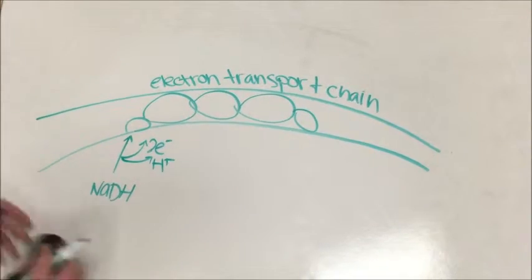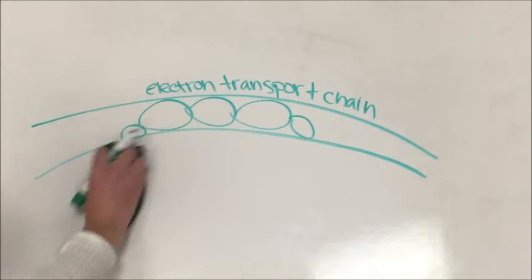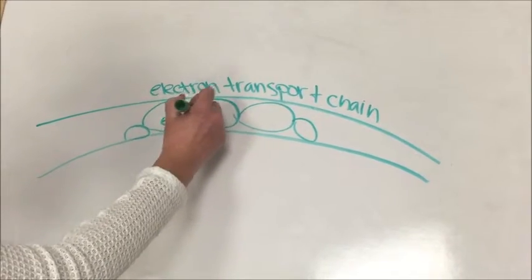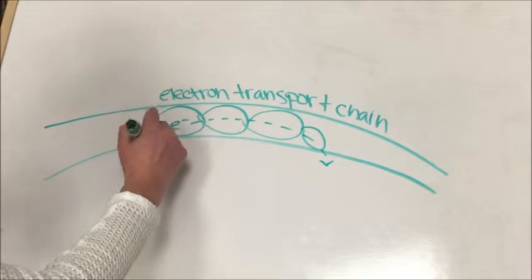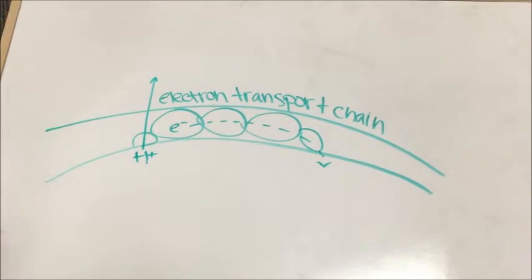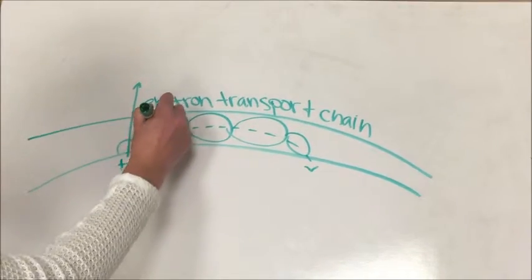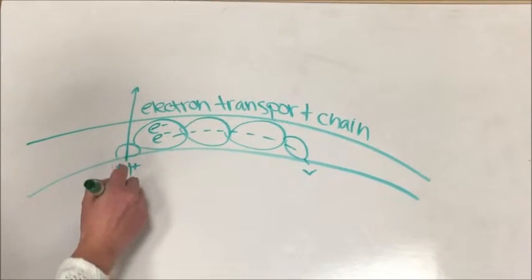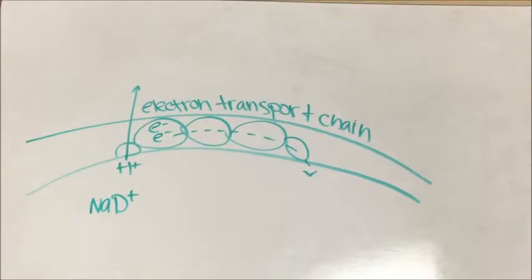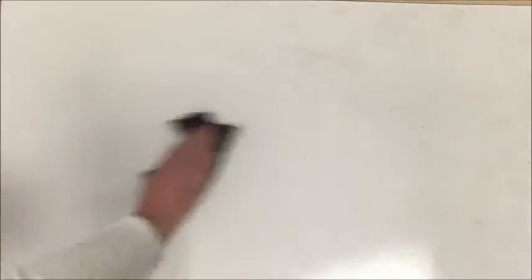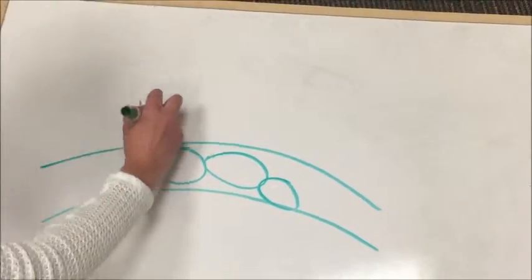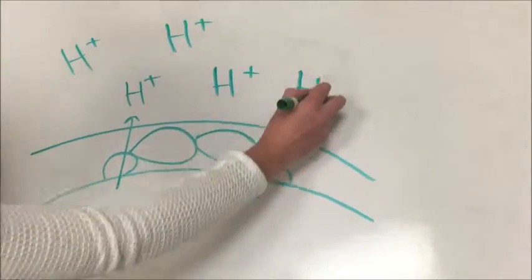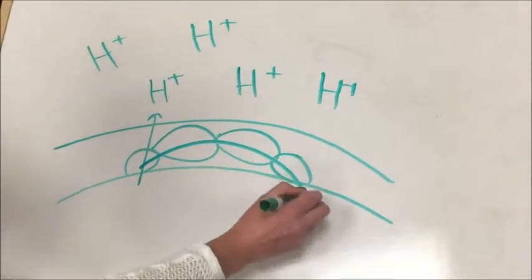NADH moves to the first protein in the electron transport chain. Because the proteins have higher electron negativities than NADH, they will pull off two electrons and a proton, oxidizing NADH to NAD+. Each protein in the electron transport chain is more electronegative than the last. As a result, the electrons will be pulled along, releasing free energy as they move.